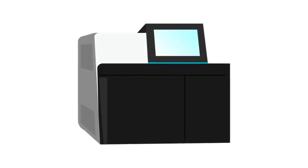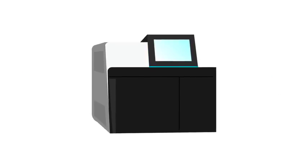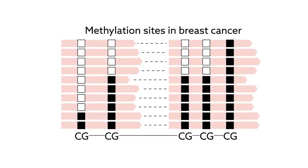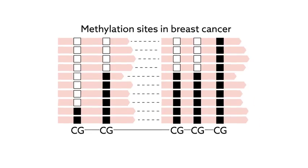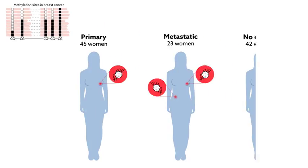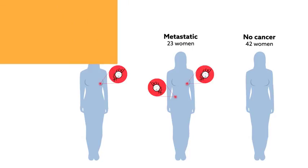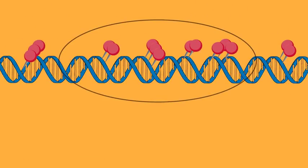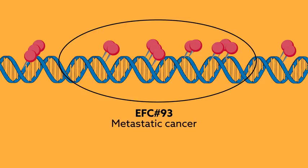The team used computer software, along with a special type of DNA sequencing, to discover cancer-specific methylation patterns in 31 tissue samples. These patterns were then tested in blood samples from women with primary, metastatic, or no breast cancer. This narrowed down a methylation signature in a single region, deemed EFC #93, that acted as a marker for metastatic cancer.